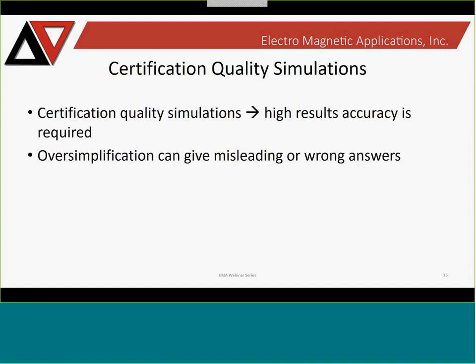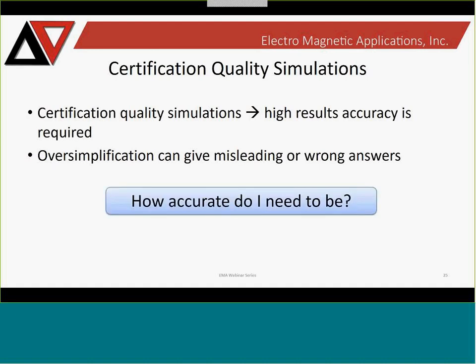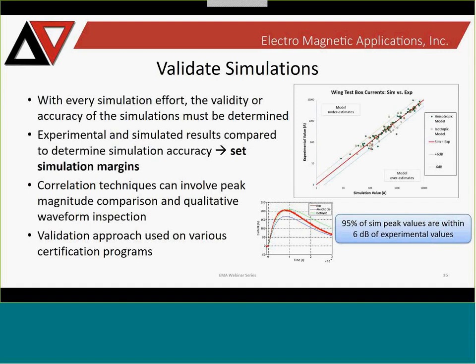Once you have your results, the question always comes up: how accurate are those results? As shown in examples, if you oversimplify your problem, you could have misleading or wrong answers. The accuracy required depends on your program — if you're using it for certification, you will have to go through a more detailed validation effort to determine how accurate your simulation technique is compared to an experimental configuration. We have done this on many aerospace platforms and seen excellent agreement between finite-difference time-domain simulation and experiment.